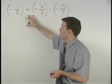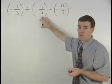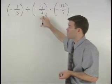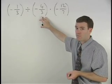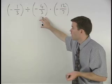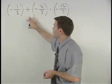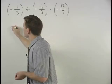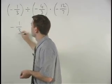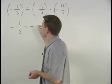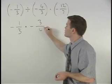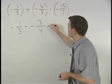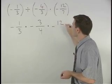And remember, dividing by a fraction means the same thing as multiplying by the reciprocal of that fraction. So we can rewrite negative one-third divided by negative four-thirds as negative one-third times negative three-fourths. And we bring down our times negative twelve-sevenths.